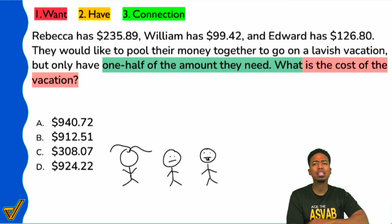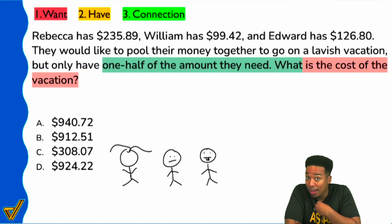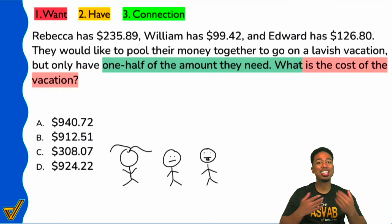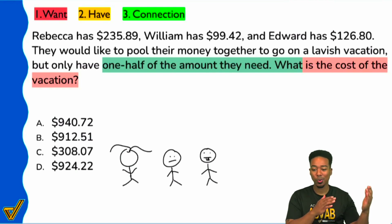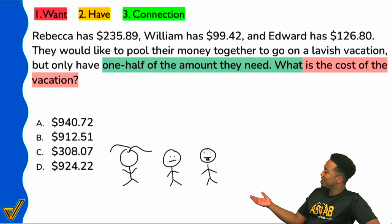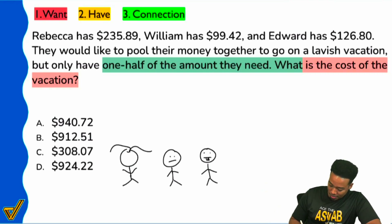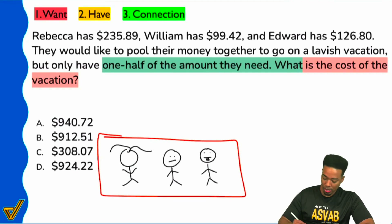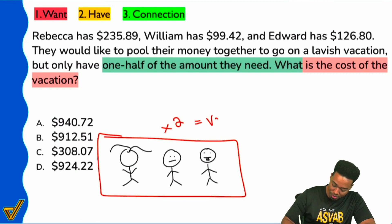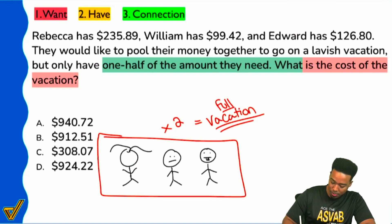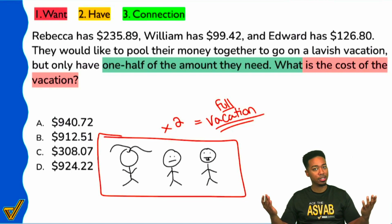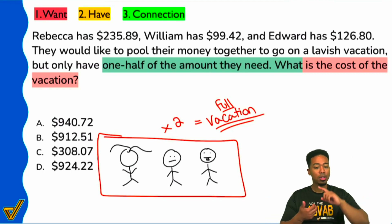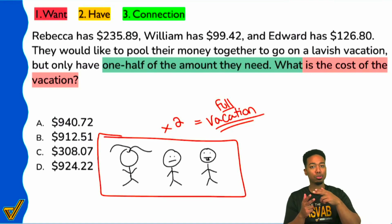If I've got fifty dollars and the fifty is only half of what I need, what's the plane ticket? The plane ticket is a hundred dollars — because if what you have is half of it, multiply by two to get the full thing. So for Rebecca, William, and Edward, we take what they have together — which is only half of what they need — multiply it by two, and we get the full vacation cost. Half times two is the full thing.